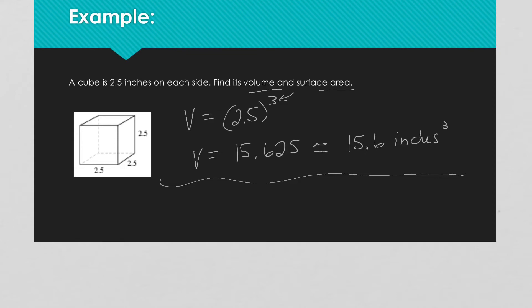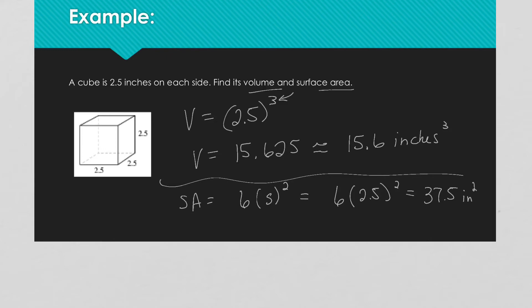For surface area, you've got 6 of each of those faces. So 2.5 squared times 6 is 37.5 inches squared. Remember, area is in square units.